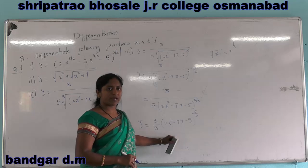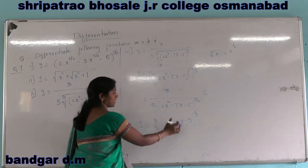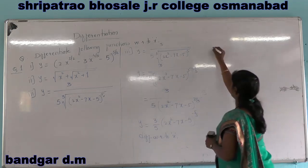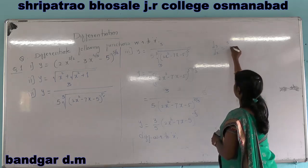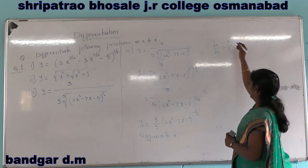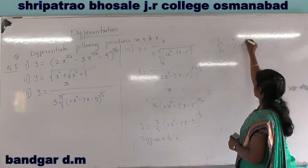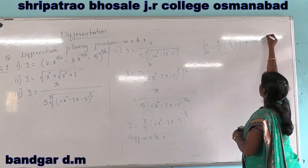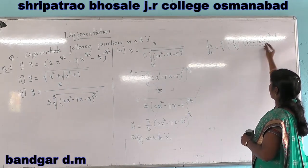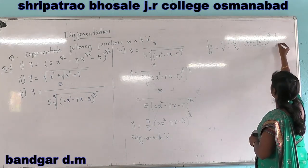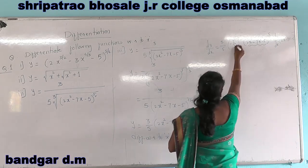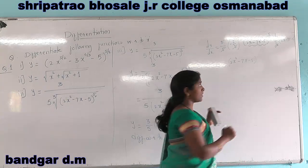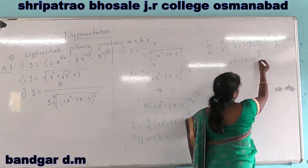Now we differentiate this simplified y with respect to x using x raised to n form. Differentiating, dy by dx equals 3 by 5, with n equal to minus 5 by 3, giving minus 5 by 3 into 2x squared minus 7x minus 5, raised to minus 5 by 3 minus 1. The 3 and 5 cancel, and minus 5 by 3 minus 1 equals minus 5 minus 3 upon 3, which is minus 8 by 3. Then multiply by the derivative of 2x squared minus 7x minus 5.